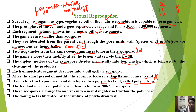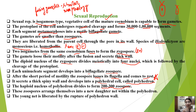The haploid nucleus of the polyhedron divides to form 200 to 300 zoospores. These zoospores arrange themselves to form a new daughter net within the polyhedron. The young net is then liberated by the rupturing of the polyhedron wall.